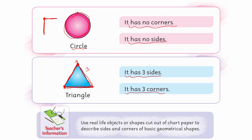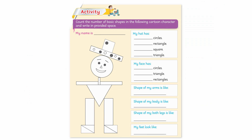Now there is an activity: count the number of basic shapes in the following cartoon character and write in the provided space. My hat — let's see how many circles are in the hat. Circle is a round shape, so count the round shapes: one, two, three, four, five, six, seven. My hat has seven circles.